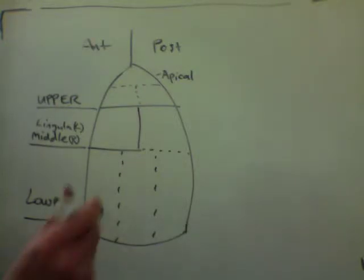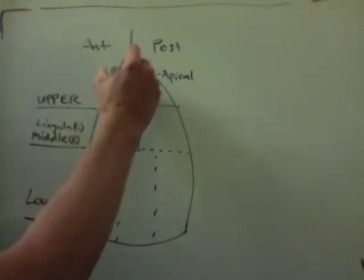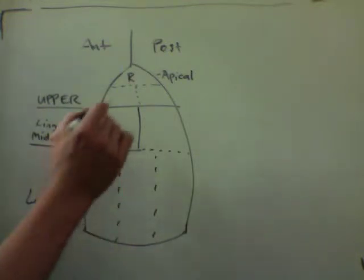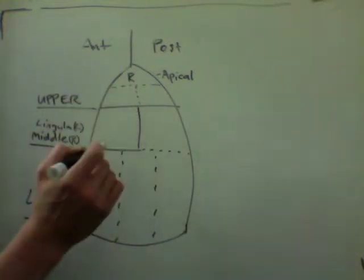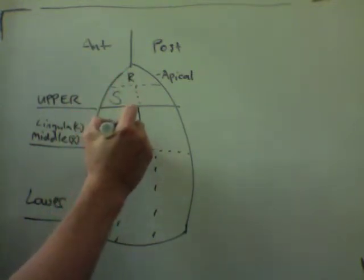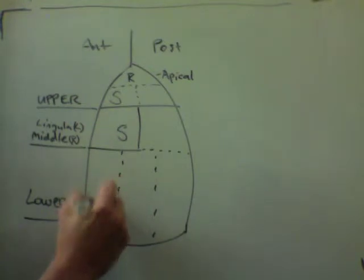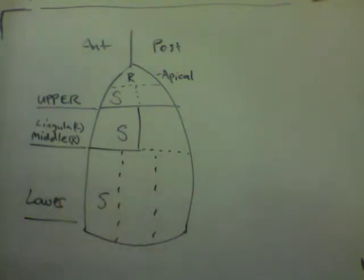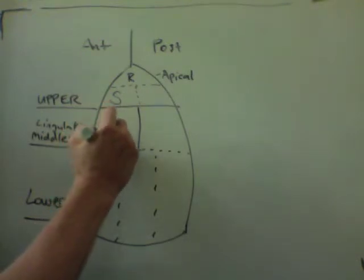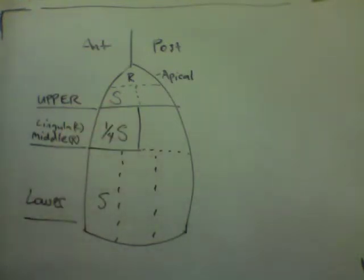The positions are: R for reclined, so the patient will be 30 to 40 degrees reclined, sort of sitting. The percussion will be superior to the clavicle. Everything on the anterior side we're going to do supine, with the exception that the middle lobe and the lingula will be a quarter turned away from supine.